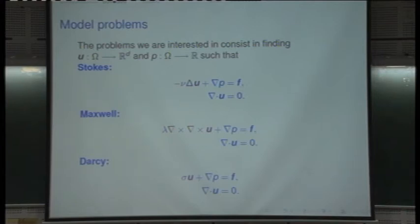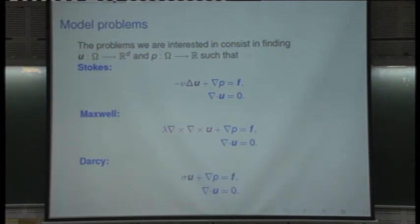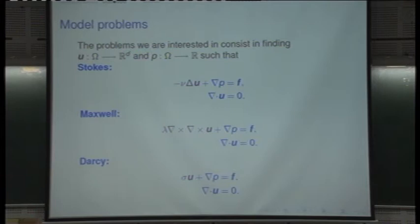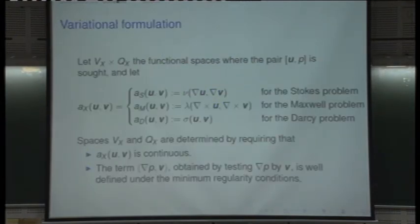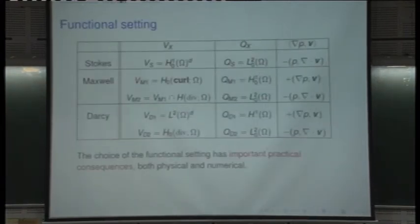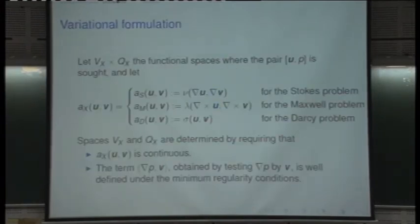The three model problems have a similar structure: Stokes has minus a physical parameter times the Laplacian (second order); Maxwell has lambda times the double curl of U (second order); and Darcy has sigma times U (order zero). We know how to approximate the Stokes problem in detail. We know a little about Darcy. Maxwell is the new and mathematically interesting one.